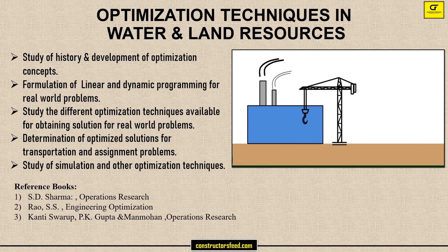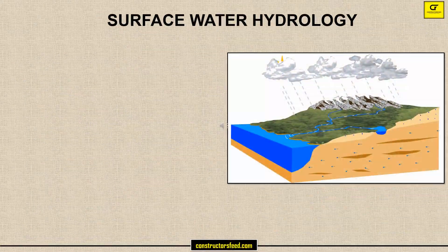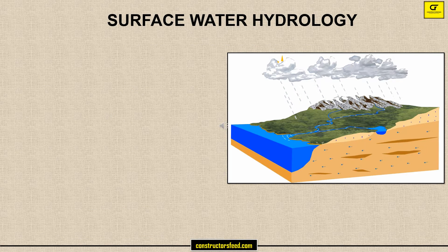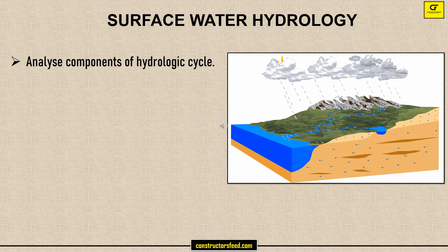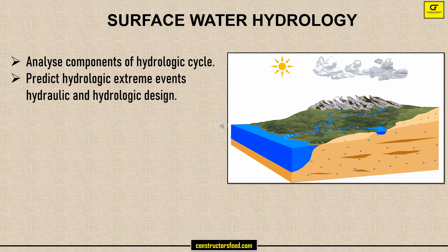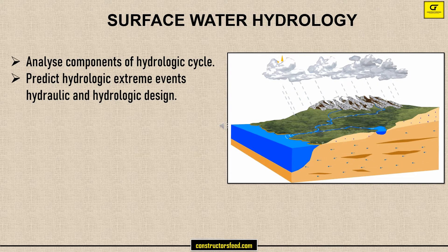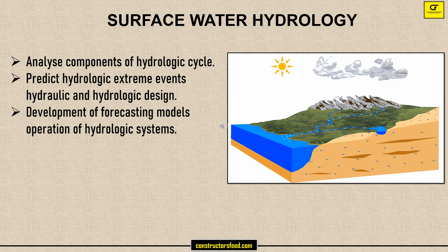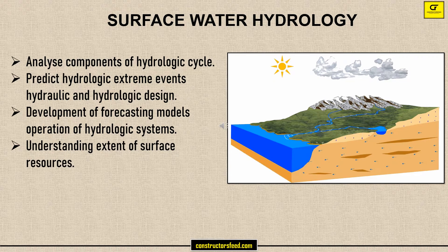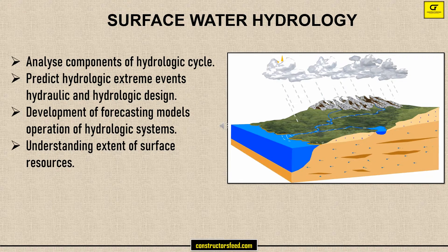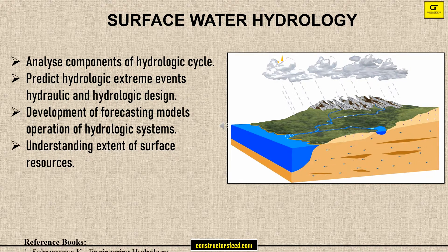These are the reference books. Surface Water Hydrology: Analyze components of the hydrologic cycle; Predict hydrologic extreme events for hydraulic and hydrologic design; Development of forecasting models for operation of hydrologic systems; Understanding extent of surface water resources. These are the reference books.